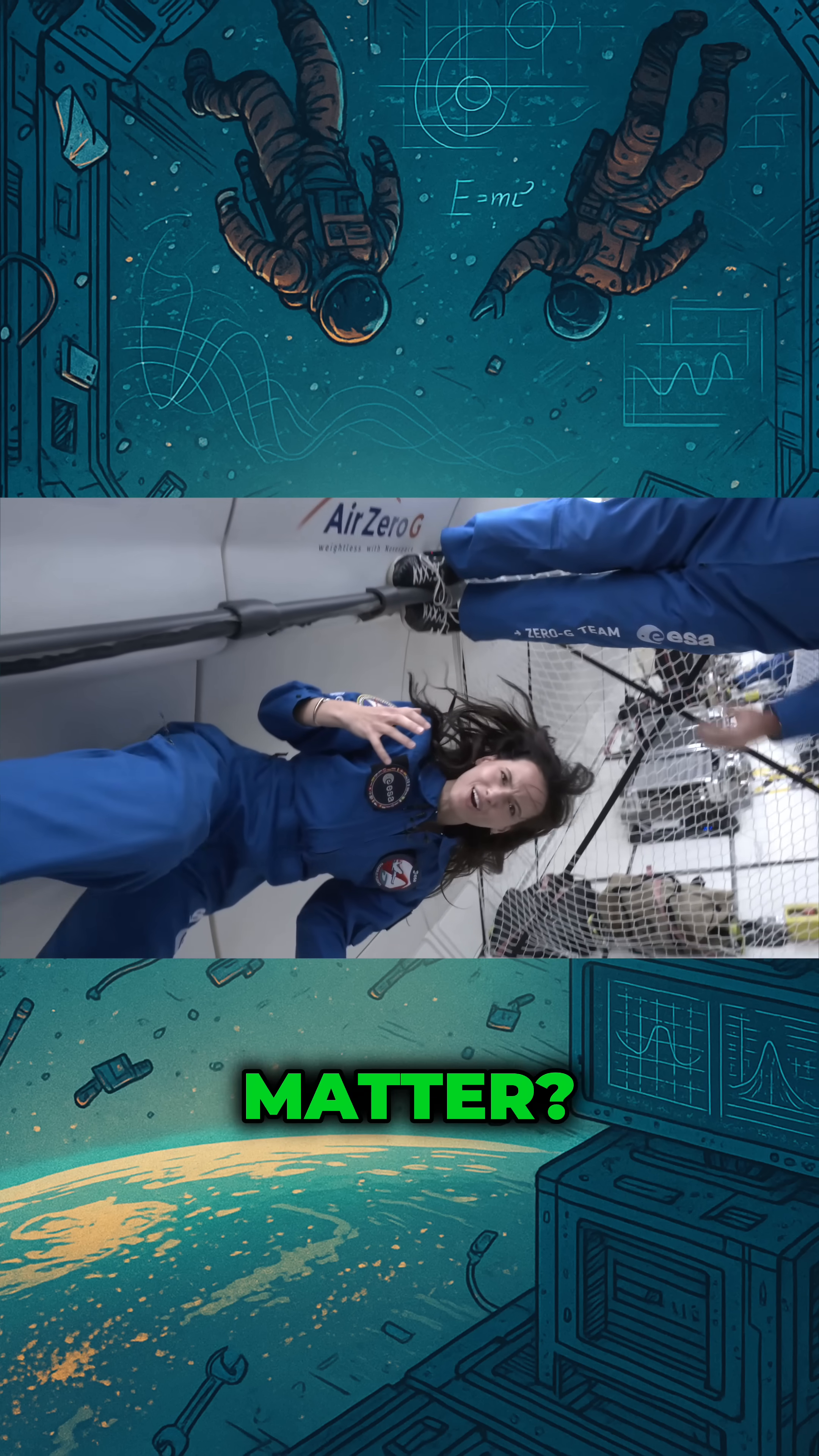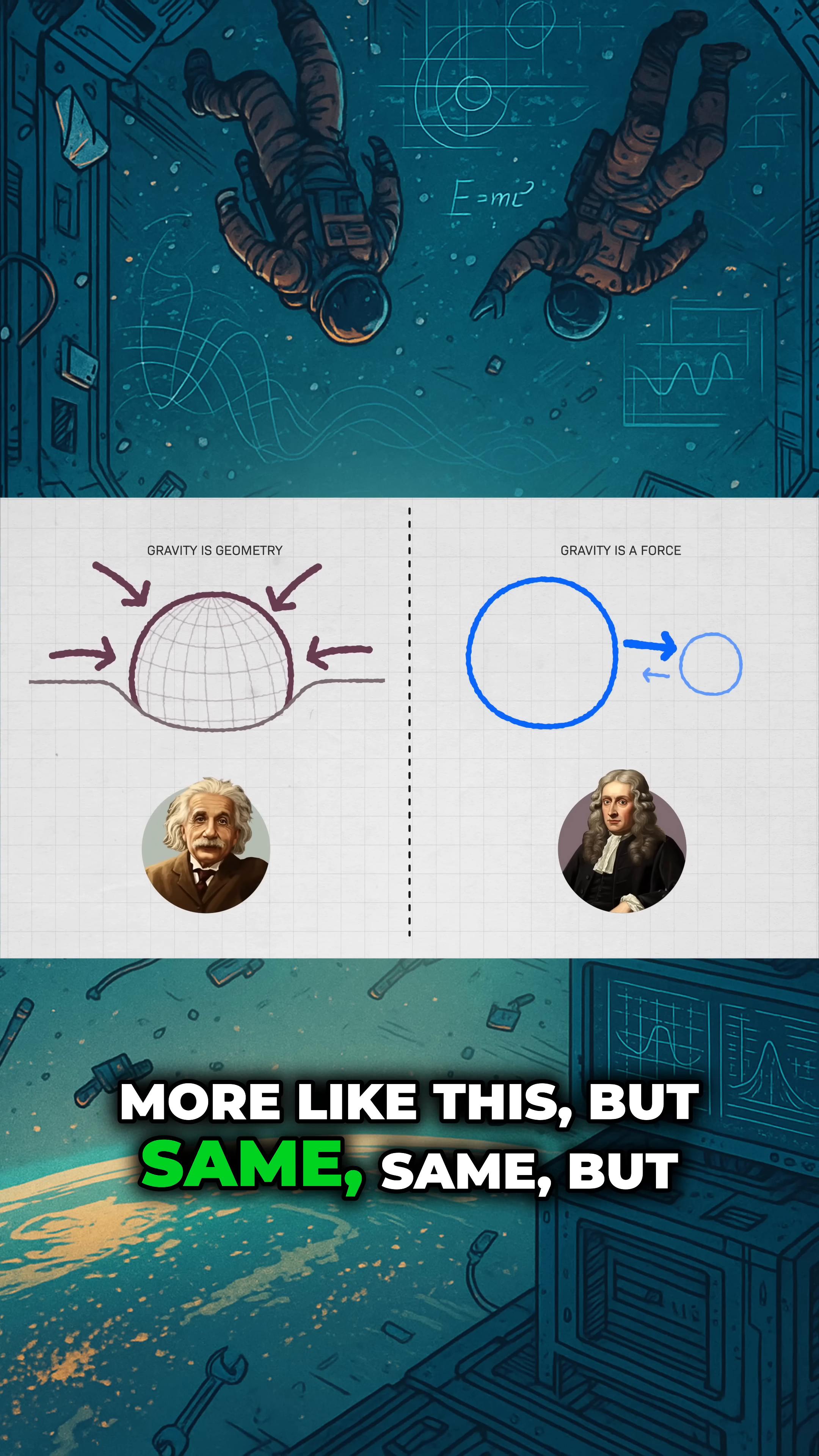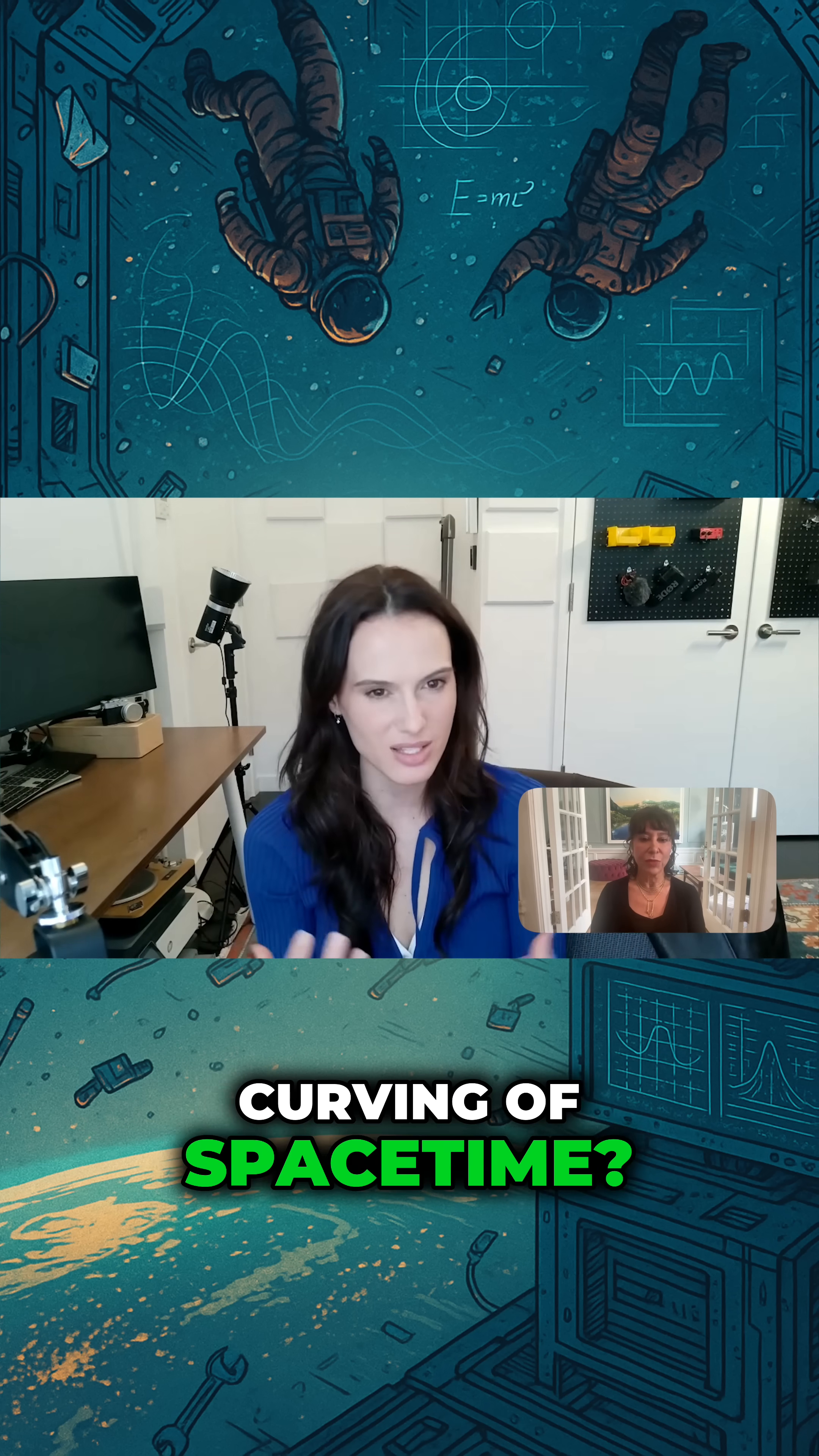Why does it matter how I describe gravity? Like, Newton's theory says that gravity looks kind of like this. And Einstein's theory says it looks more like this. But same, same, but different, right? Why does it matter whether I think about gravity as a force that literally pulls things or as the curving of space-time?